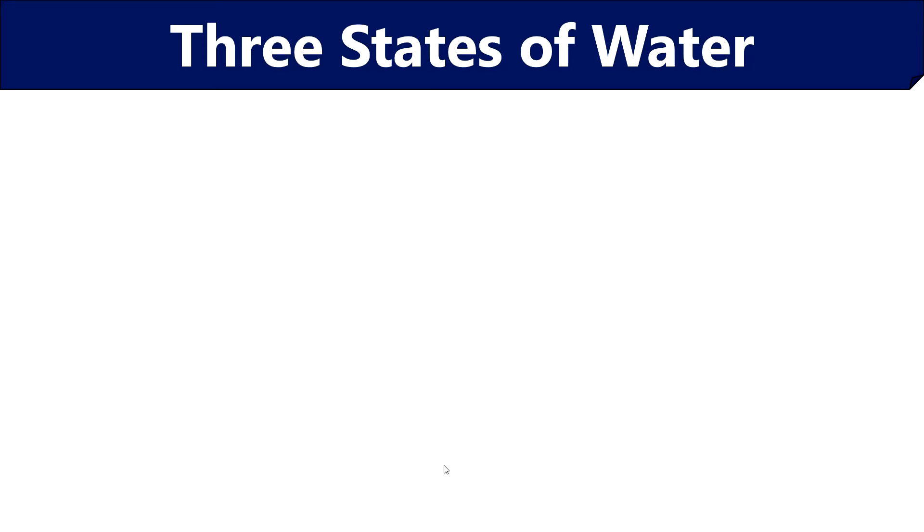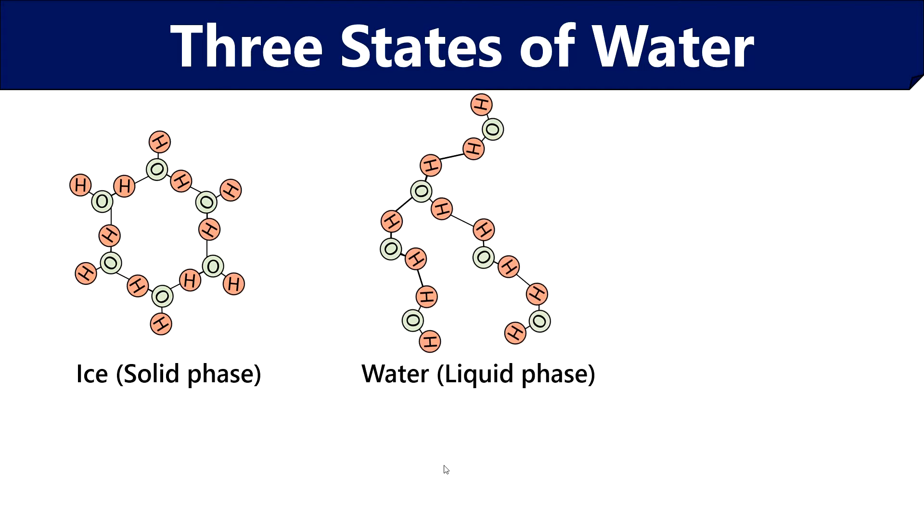Water is a natural substance that occurs in three physical states. Ice is the solid phase of water. Water also exists in a liquid state. And water vapors constitute the gaseous state of water.